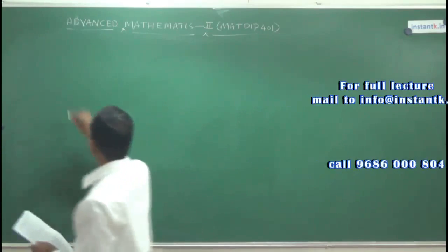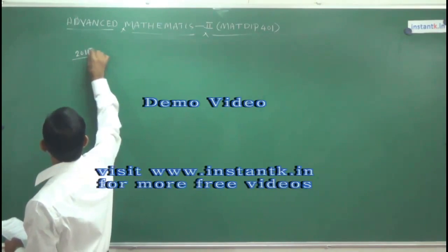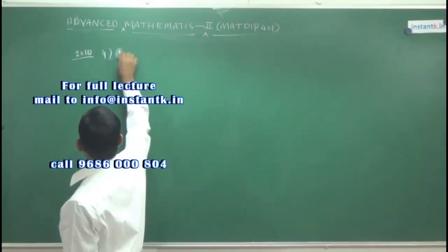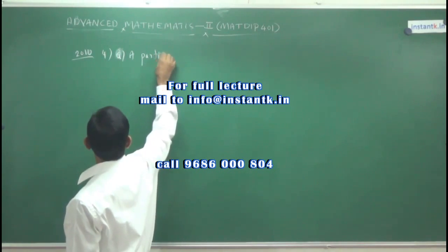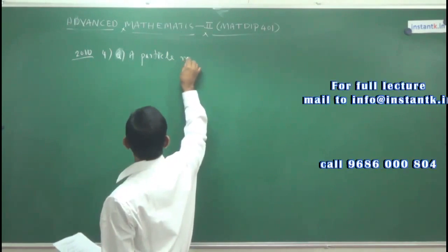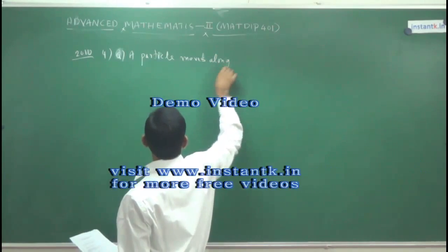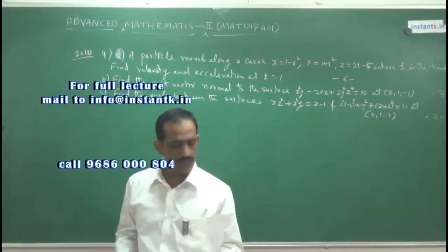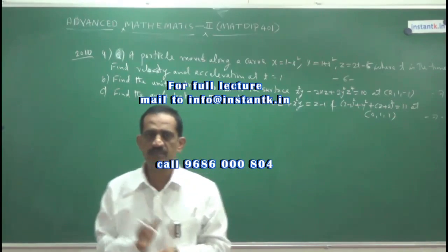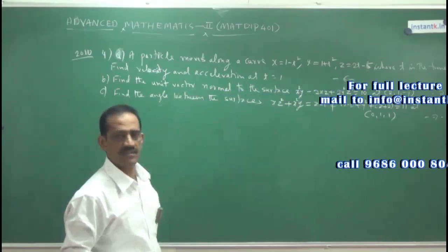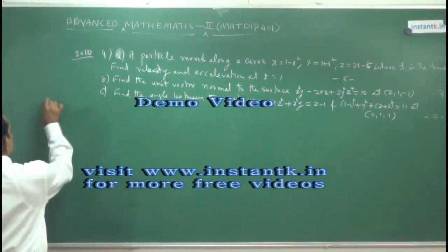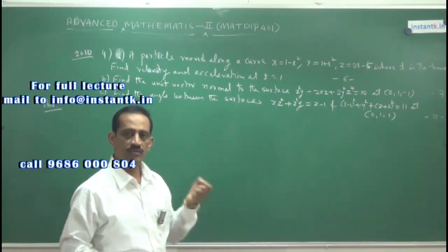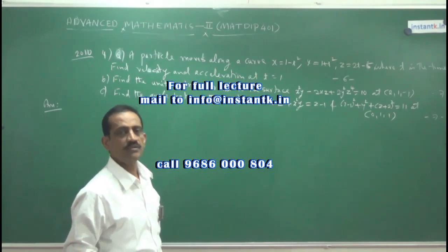Let's look at some problems asked in the exam. This was asked in 2010. The fourth question is usually structured like this: part (a) is a particle moves along a curve — that is a 20-mark question. The third question will be from the basic concepts, and the second question will mostly be from this type of concept. You should know how to answer the first one: for a particle moving along a curve, you need to find velocity and acceleration.